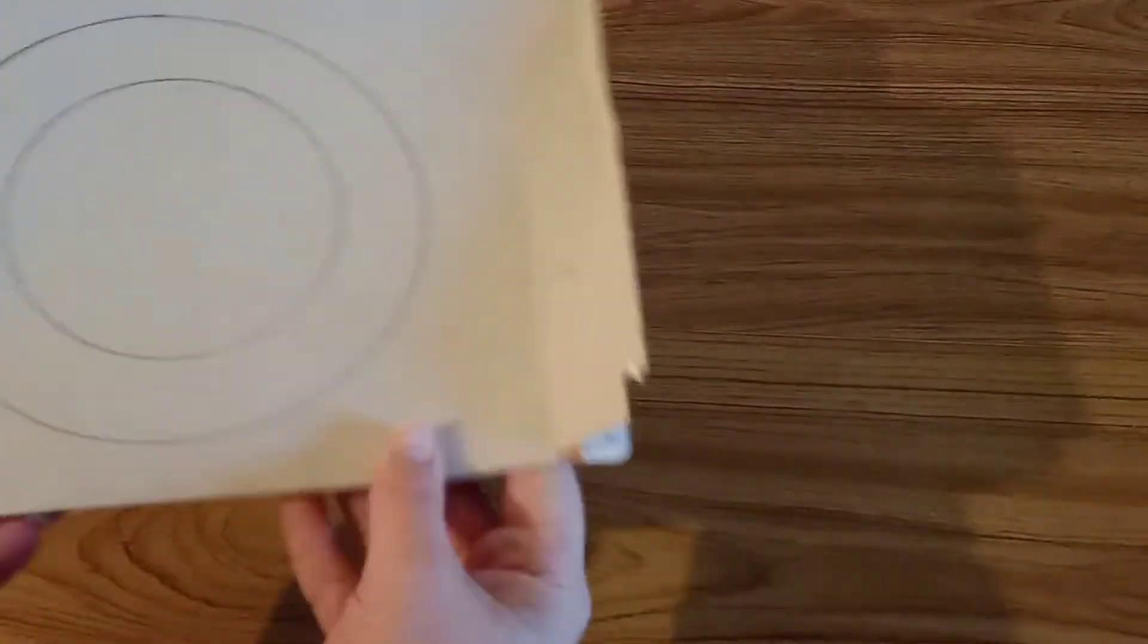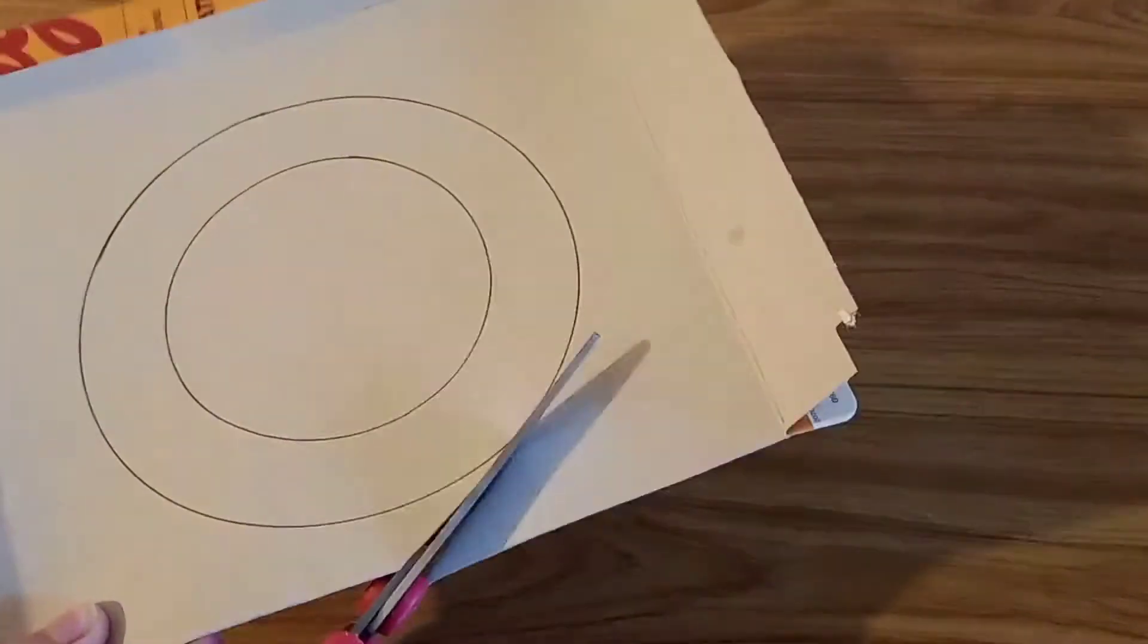It doesn't need to be perfectly in the center, just try to get it as close to the middle as you can. Once you have your circles made, you can fold the cardboard over on top of itself and then start to cut out the circles.